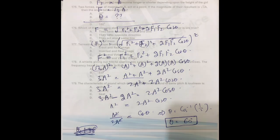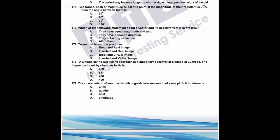Question 176: which statement about a vector and its negative vector is true? A vector and its negative have equal magnitude and units — correct. Their direction is opposite — correct. They act on the same line — correct. So the answer is all of the above.